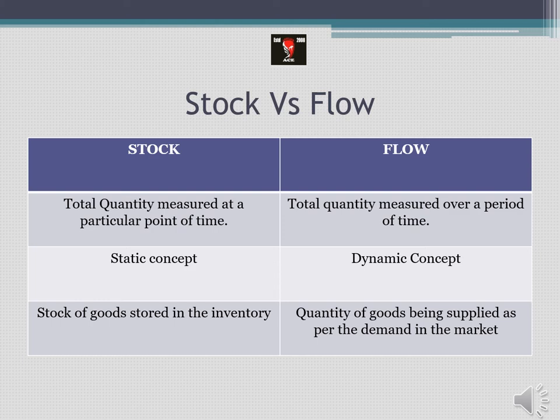Out of that stock I may remove 10 pieces or 50 pieces as per the requirement of customers in the market. The quantity that I keep removing at many different points of time is called flow. So stock is total quantity measured at one time, and flow is the quantity measured over a period of time - it is a supply being taken from the stock. Stock is considered a static concept; it does not fluctuate easily, it is a compilation at one point of time. Flow is a dynamic concept - it depends upon the demand in the market. If demand is high, flow will be more; if demand is less, flow will be less.